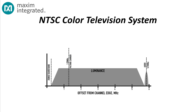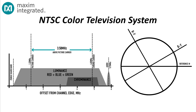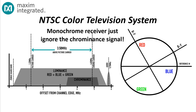The solution they arrived at was to create a luminance signal that represented the sum of the red, blue, and green channels, and then to create a quadrature amplitude-modulated chrominance subcarrier that contained the difference between red minus intensity and blue minus intensity. From these signals, it's pretty easy to recreate the red, blue, and green channels, and receivers without color capability can just use the regular intensity signal.